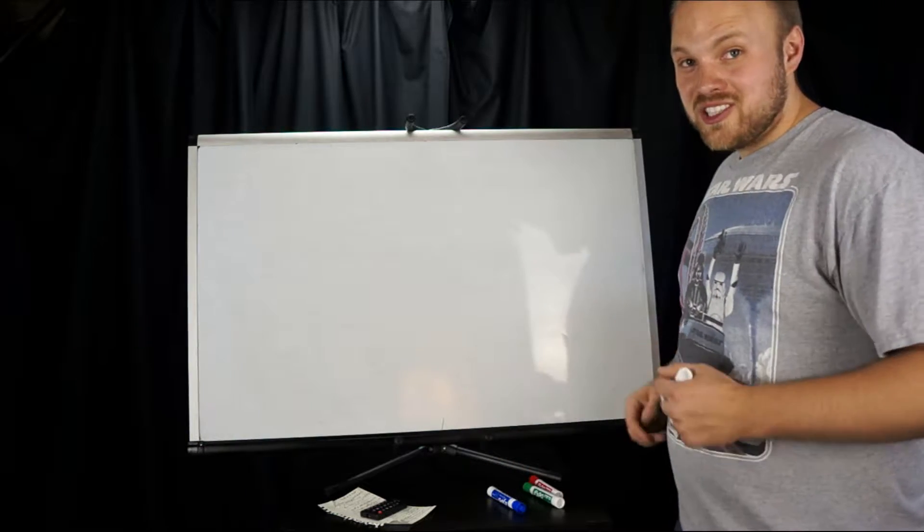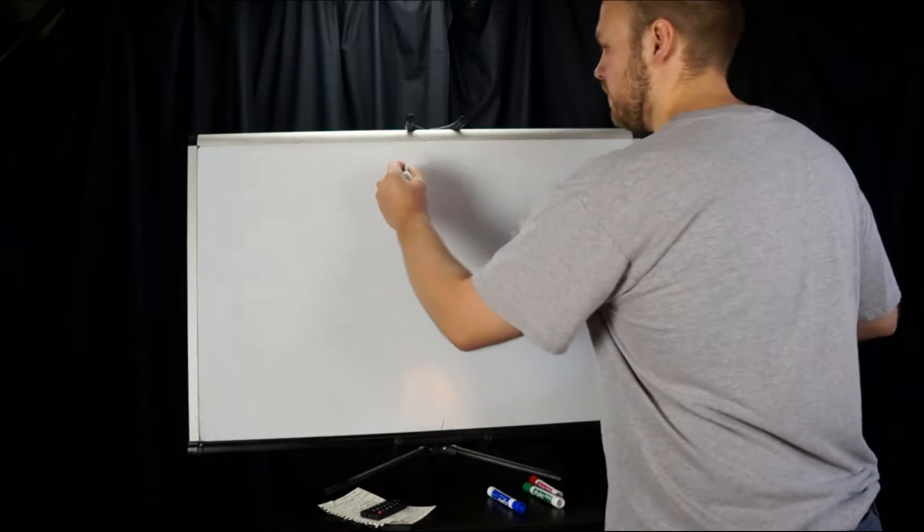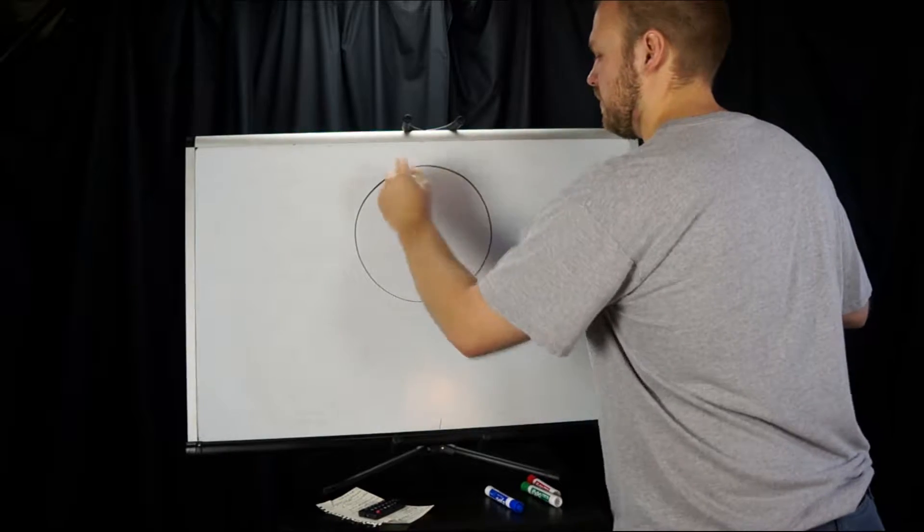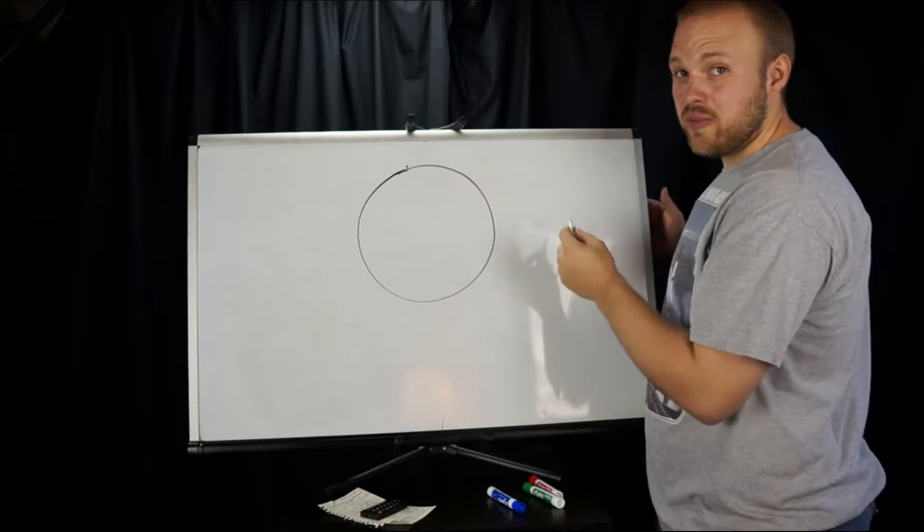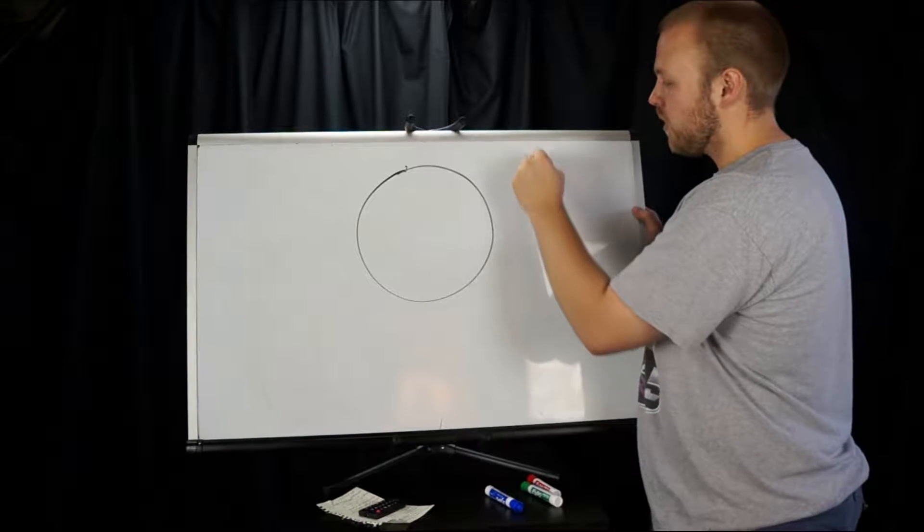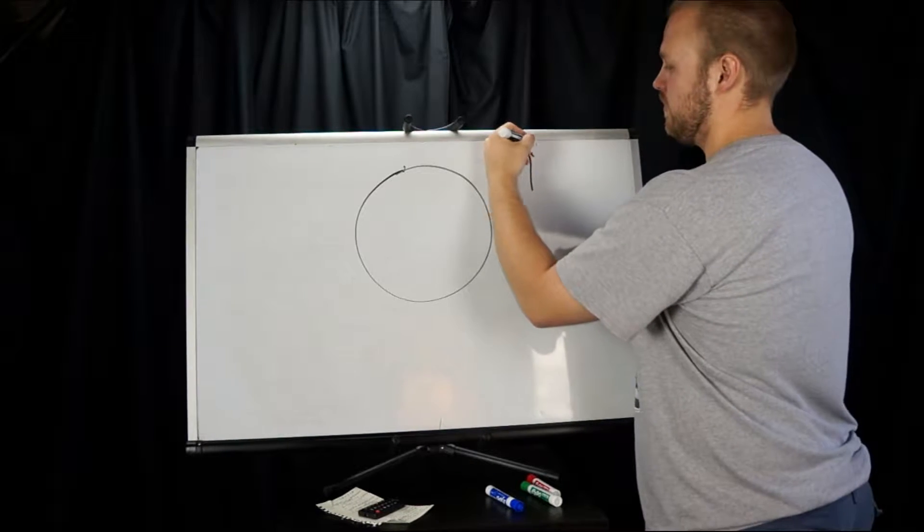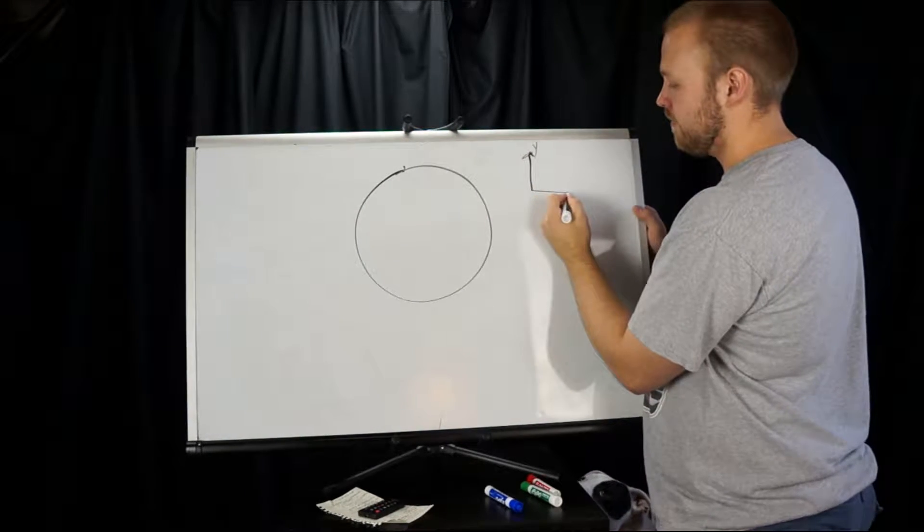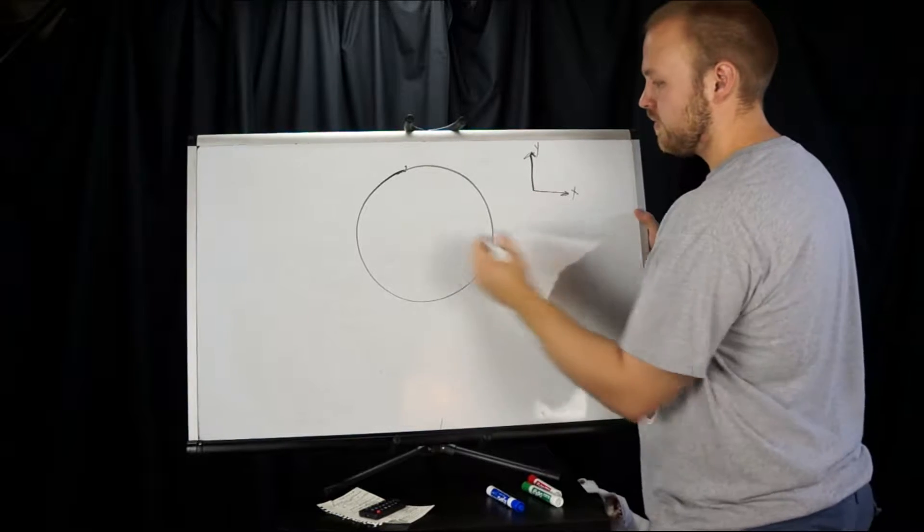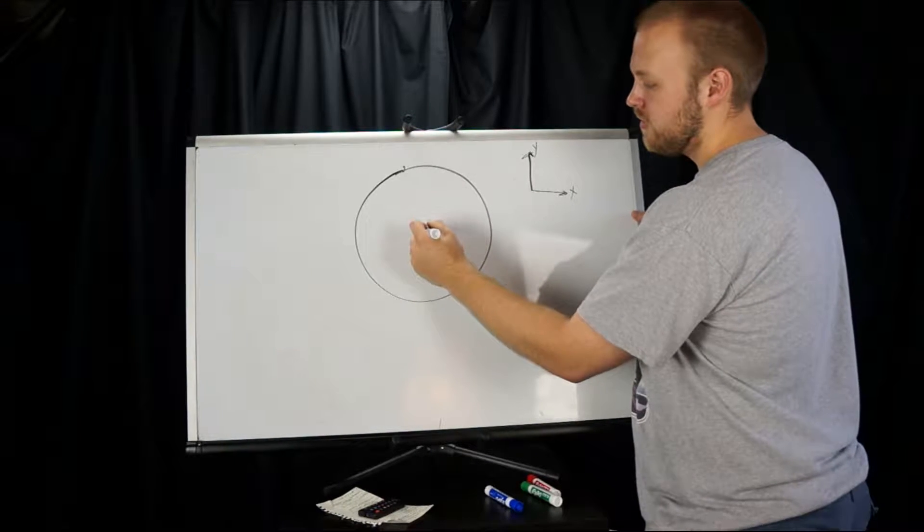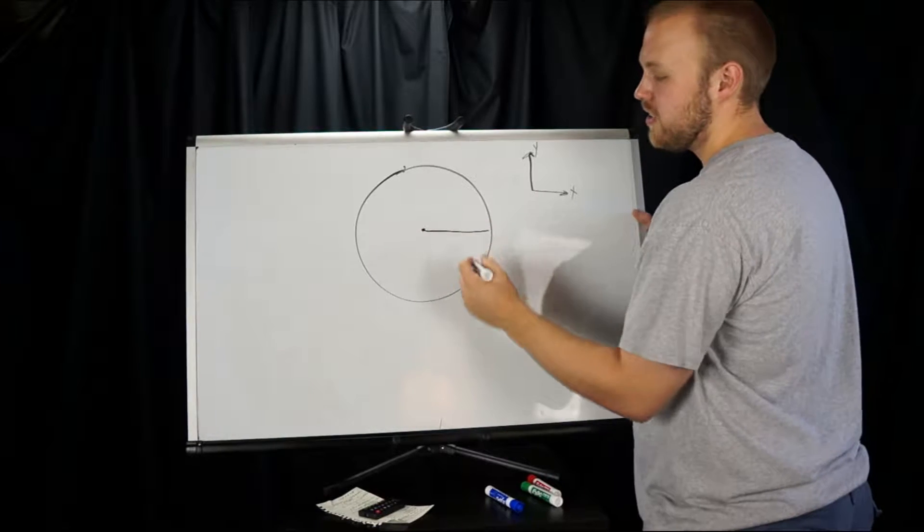So we're going to start with a circle. Okay, I'm going to draw my coordinates on, Y and X. We're going to say the middle is the origin, and this thing has a radius of one.